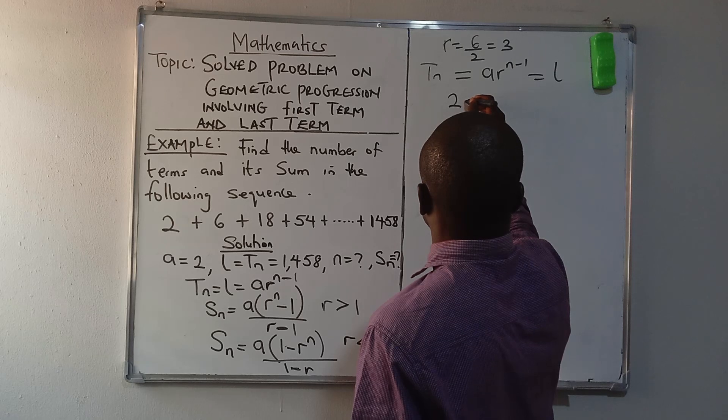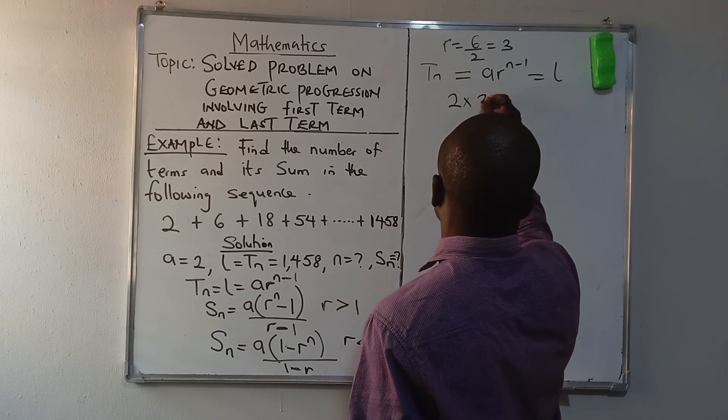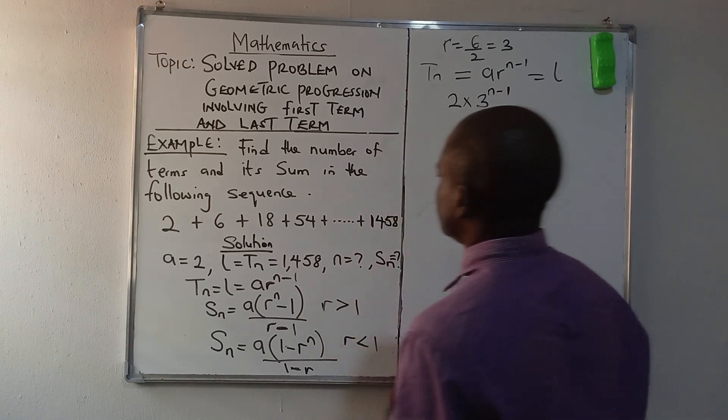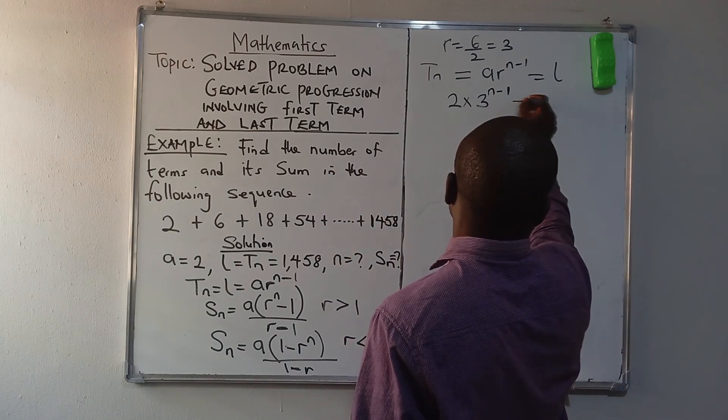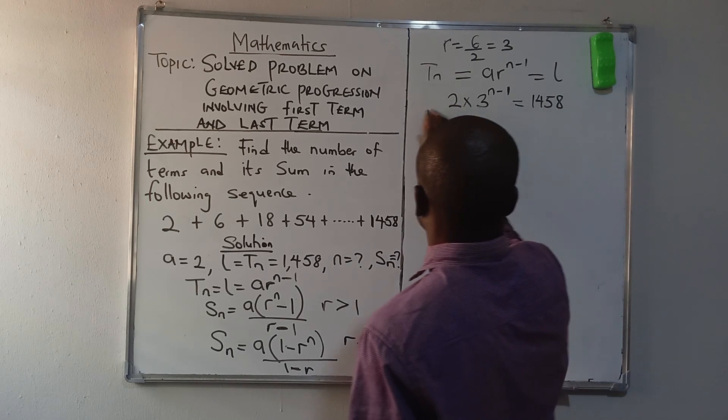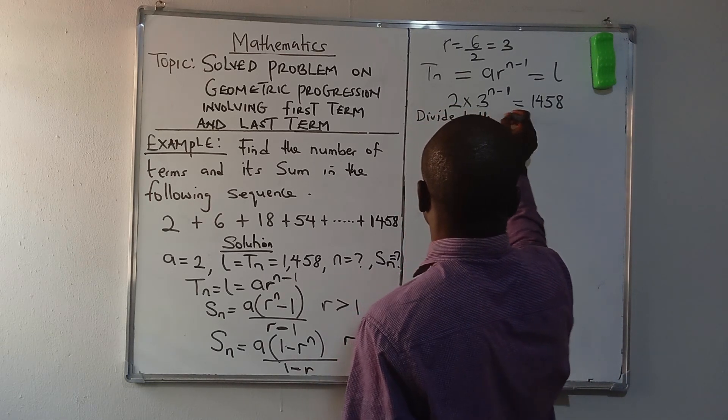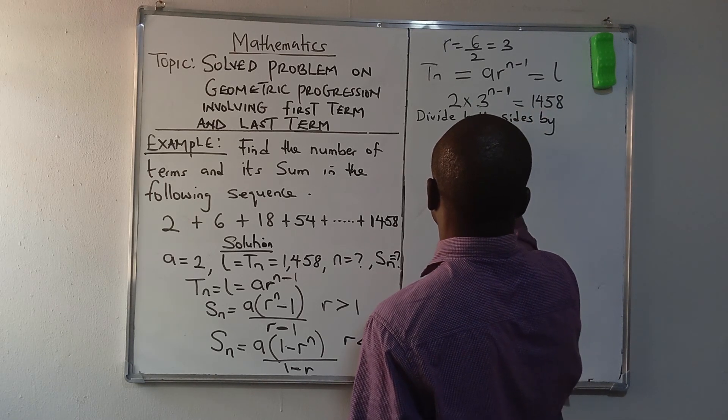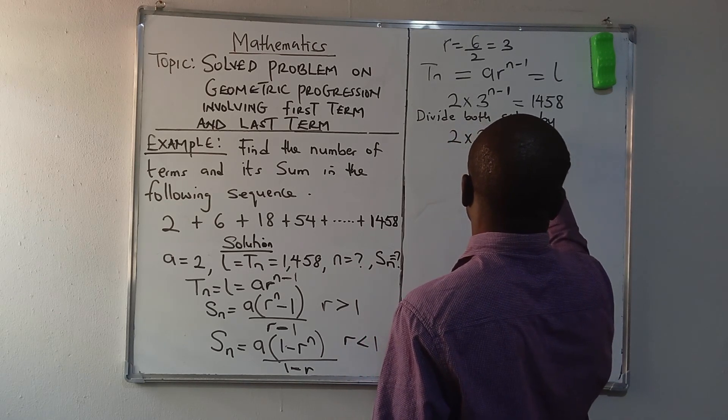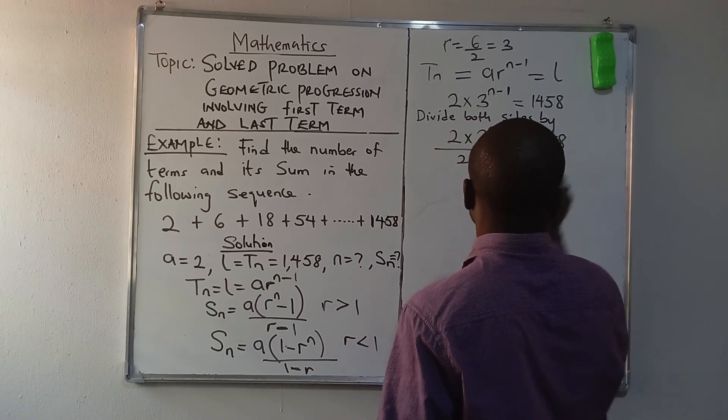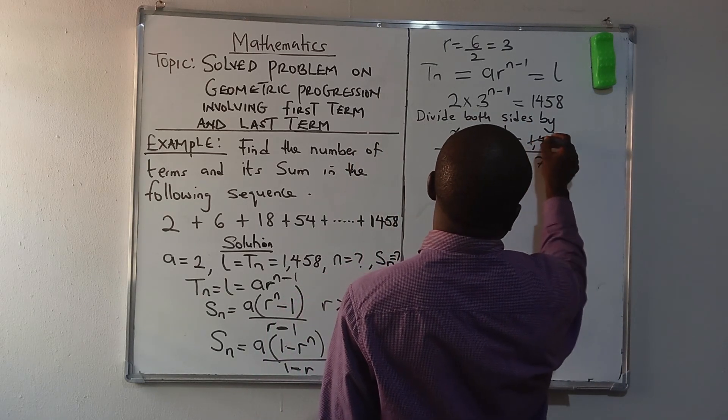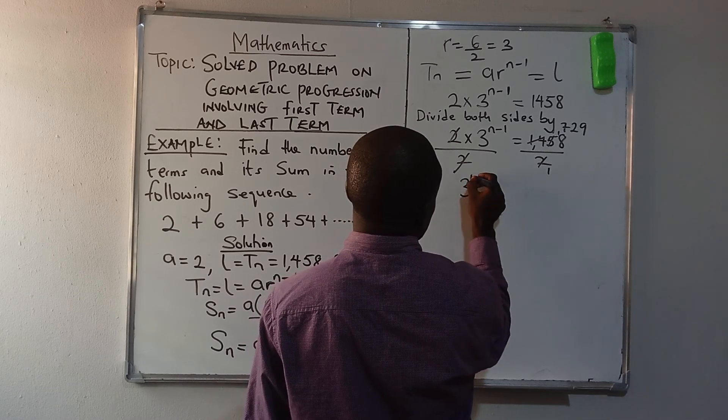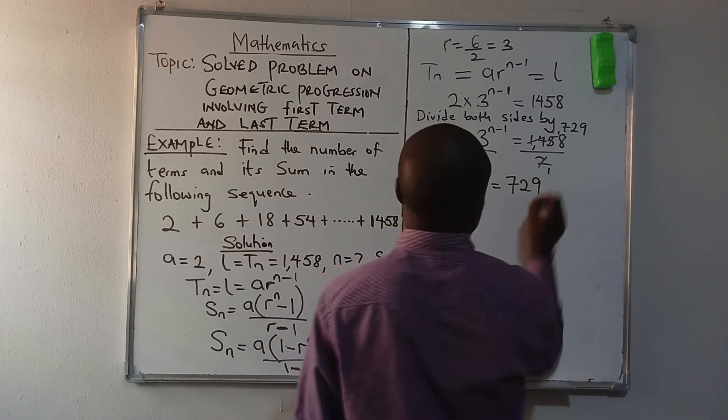Now what's our first term? Which is 2. R times, what's our common ratio? Which is 3, raised to power N minus 1. So we have 2·3^(N-1) = 1458. Dividing both sides by 2, 2 cancels 2. We have 3^(N-1) = 729.